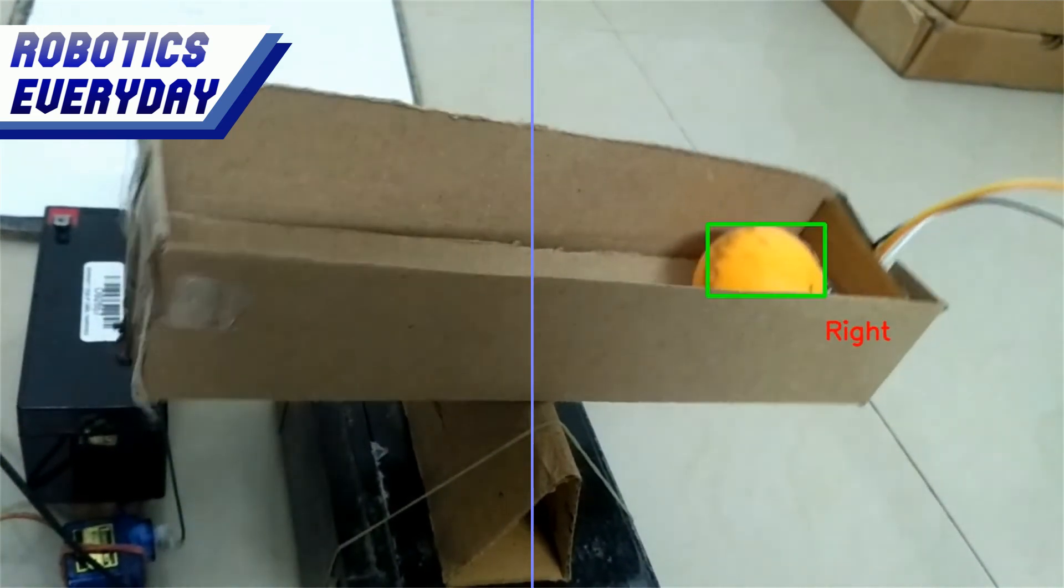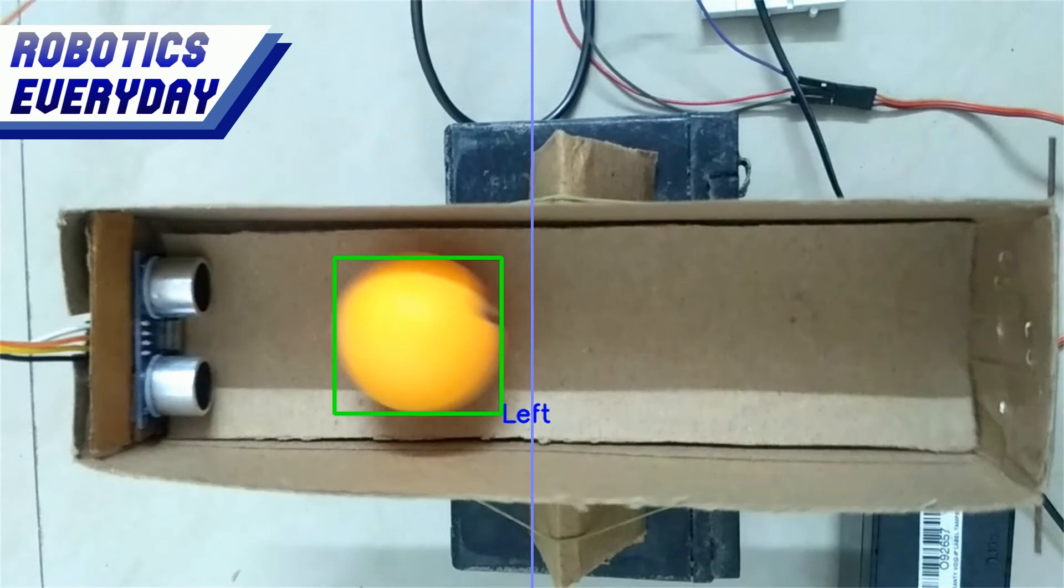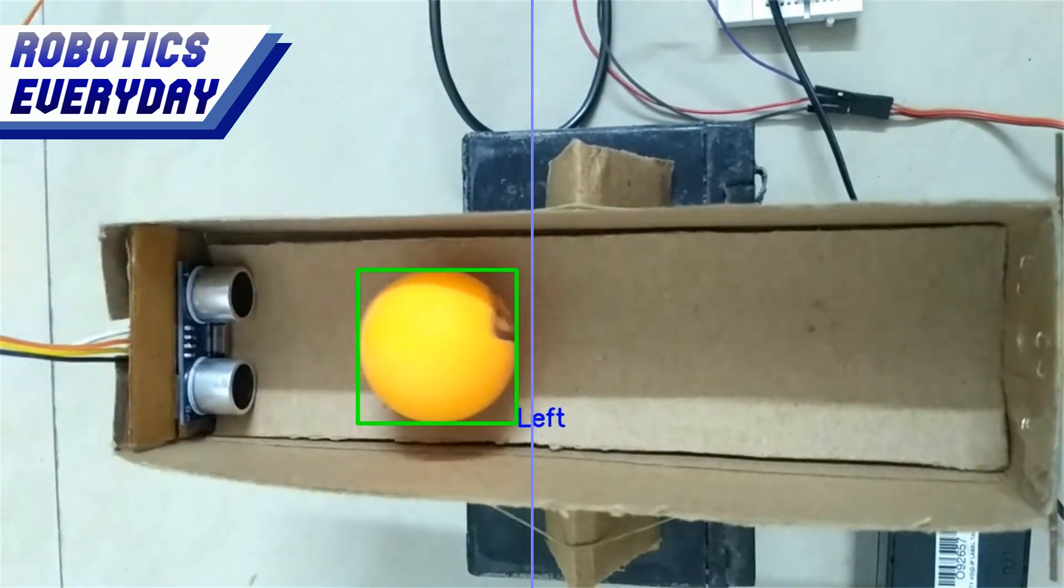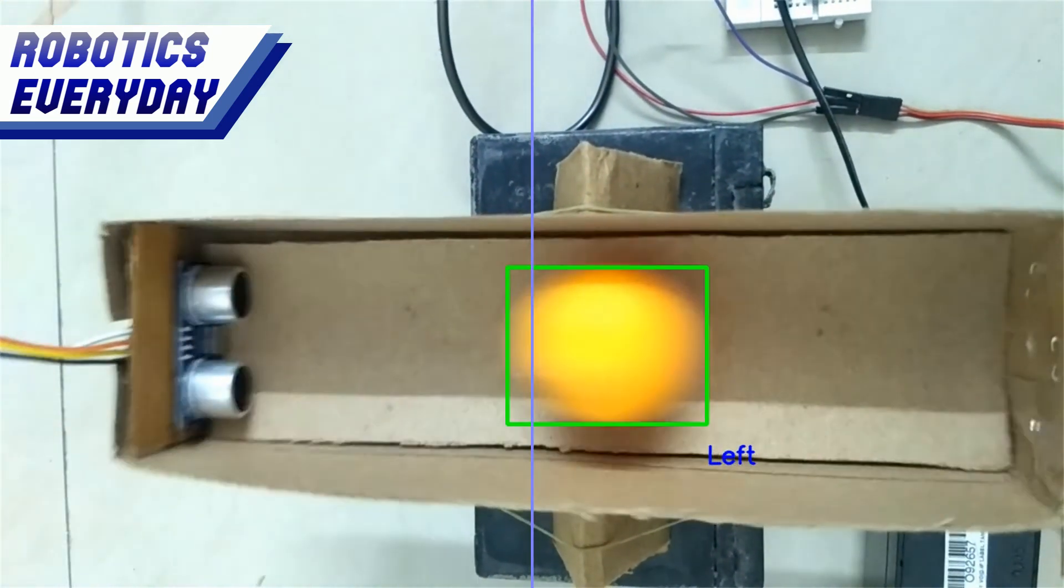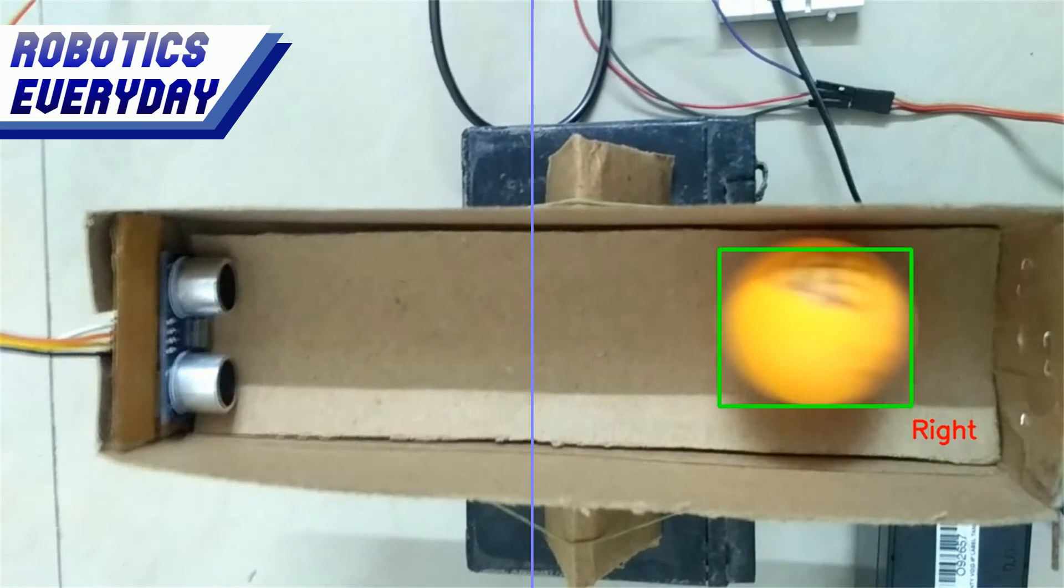So whenever it detects the object in the left side, it displays the word 'left' in blue color. And whenever it detects the object in the right side, it displays the word 'right' in red color.